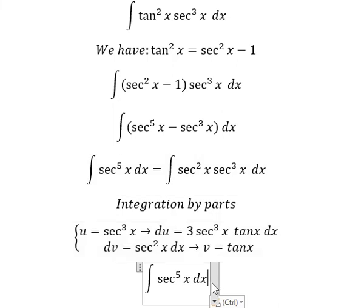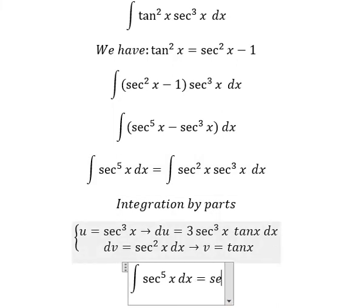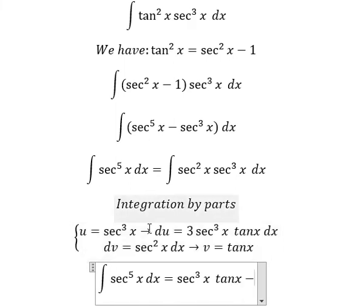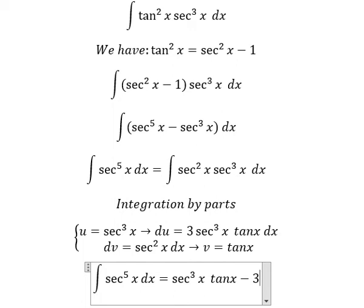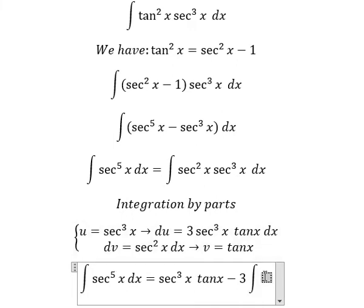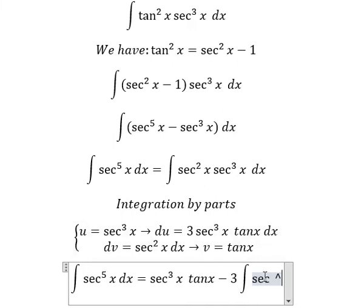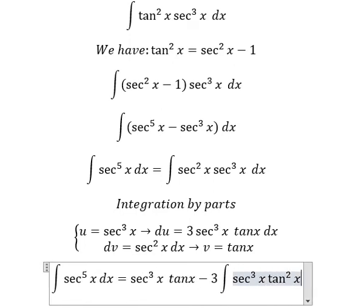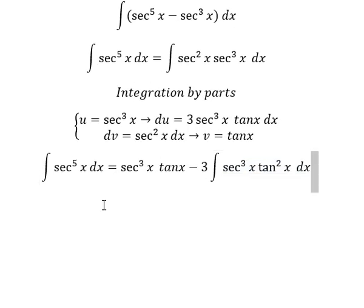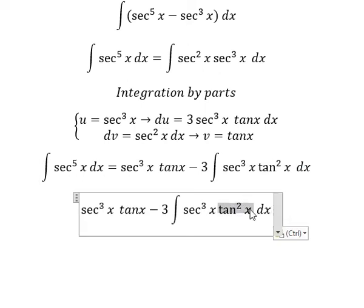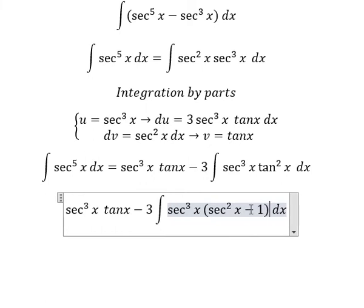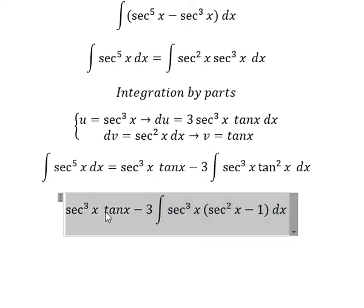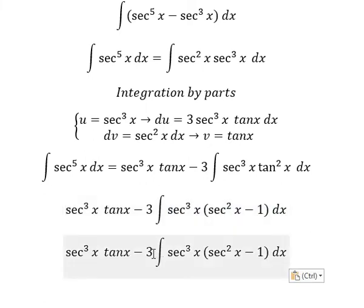So we have u multiplied by v, minus the integral of v·du. That's secant³x multiplied by tan x, minus the integral with number 3. We have secant³x and we have tan x times tan x dx, where tan²x equals secant²x minus 1.